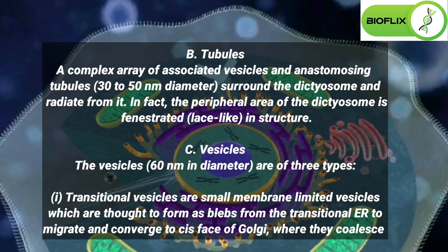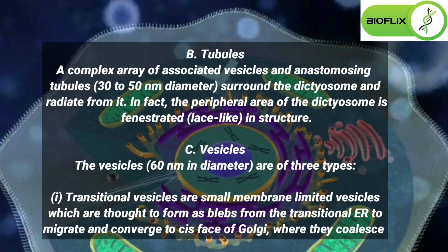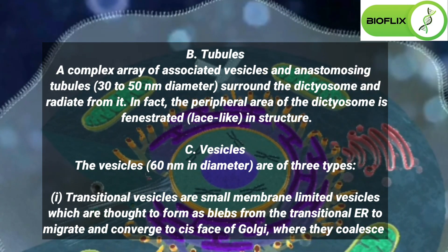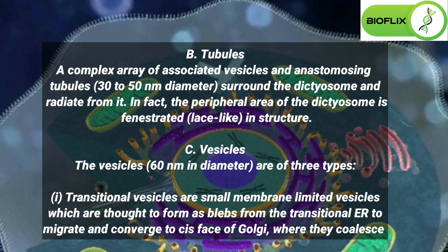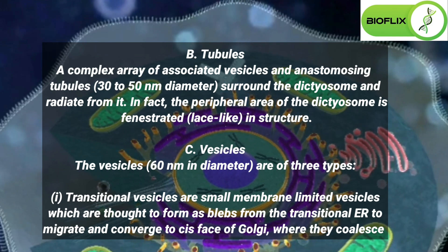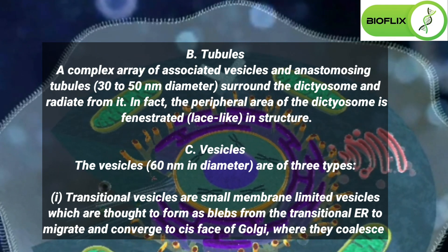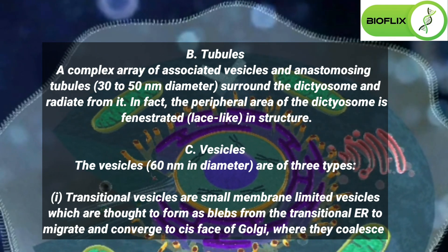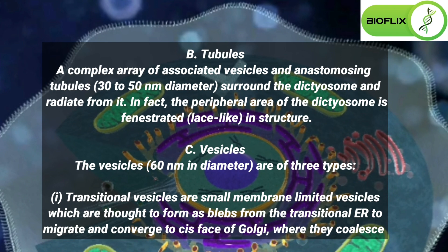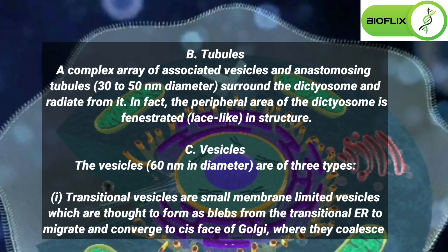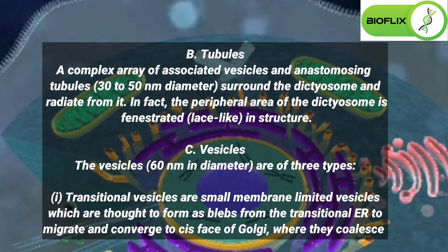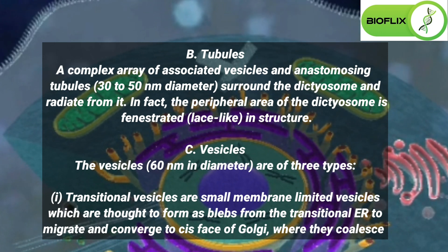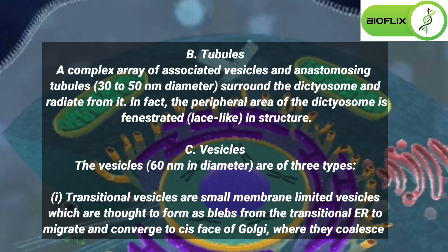Each stack of cisternae forms a dictyosome, which may contain 5 to 6 Golgi cisternae in animal cells, or 20 or more cisternae in plant cells. Tubules. A complex array of associated vesicles and anastomosing tubules, 30 to 50 nanometers in diameter, surround the dictyosome and radiate from it. In fact, the peripheral area of the dictyosome is fenestrated, lace-like, in structure.